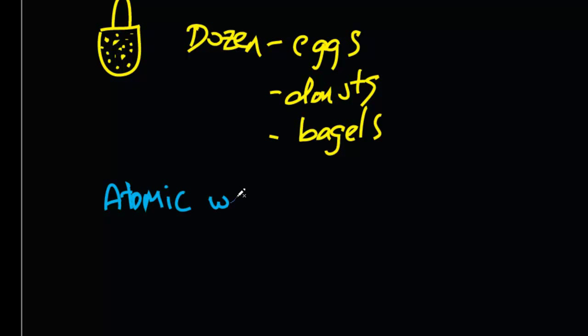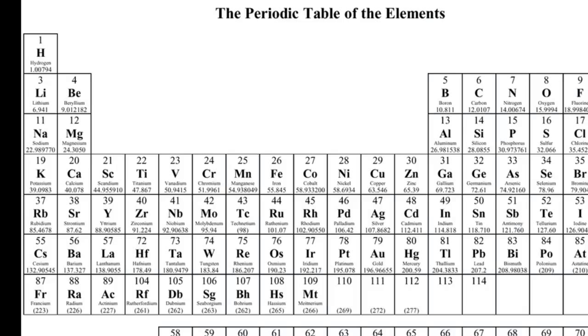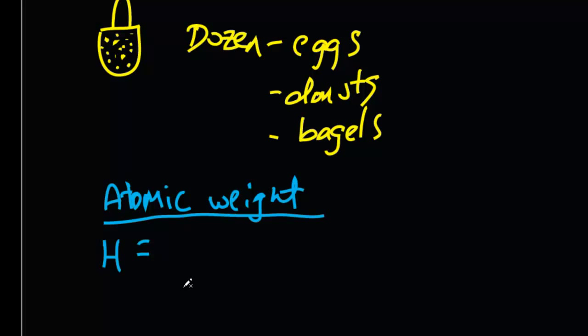Now I want the atomic weight of, let's say, hydrogen. Well, the atomic weight of hydrogen is written right on the periodic table. Let's see what it says here: 1.00794 grams per mole. So 1.00794 grams per mole.